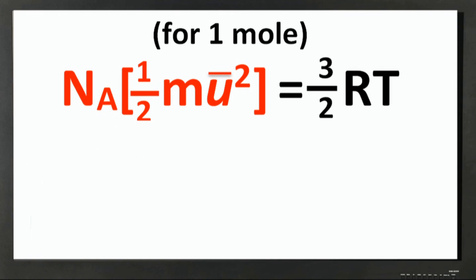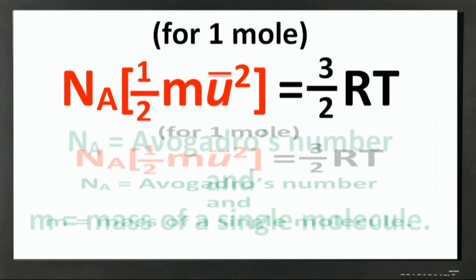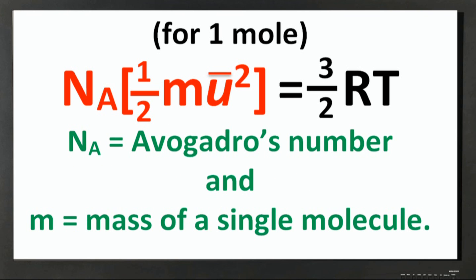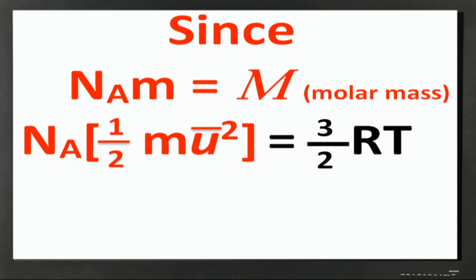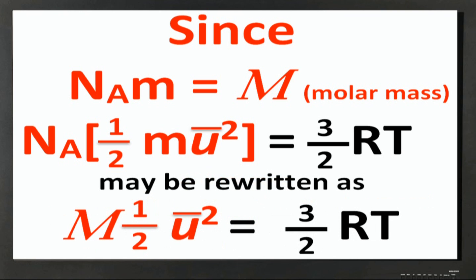For one mole of a gas we may multiply the left side of the equation by Avogadro's number, 6.022 times 10 to the 23 molecules per mole. And of course, the lowercase m in the equation represents the mass of a single molecule. Since Avogadro's number times the mass of a single molecule of the gas is equal to its molar mass, then the equation may be rewritten as follows, where molar mass times one-half the square of the average speed is equal to three-halves RT.